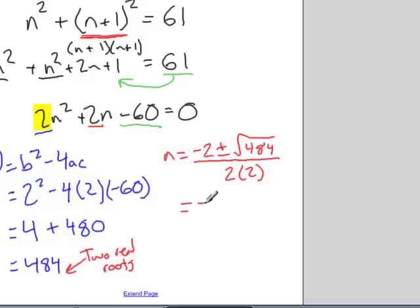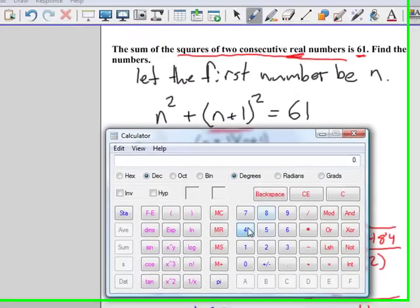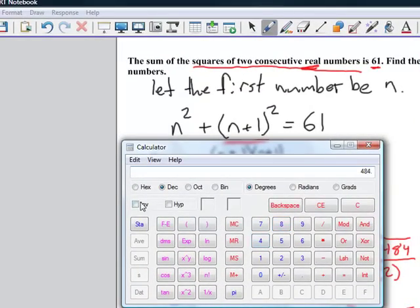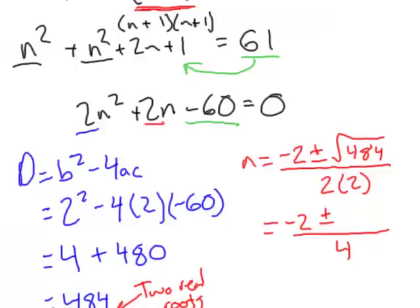When I simplify this, I have minus 2 plus or minus on the denominator 4, and then I get out my calculator. Let's take 484 and we'll find the square root. It's 22. So plus or minus 22.